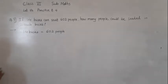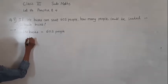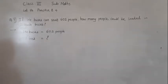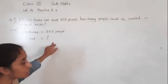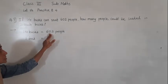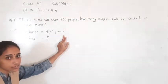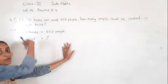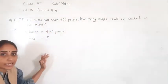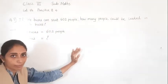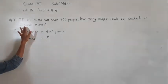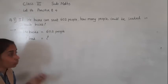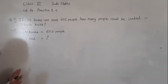So here I will write: 1 bus — how many people? In 1 bus, how many people are there? It is given for 14 buses, 602 people can sit. Then in 1 bus, how many people can sit? If we get the answer for 1 bus, then we can find for 2 buses.